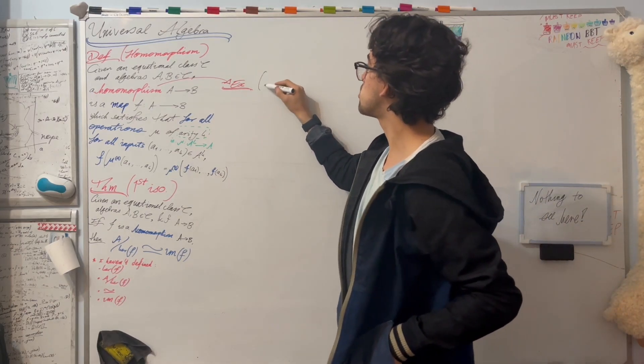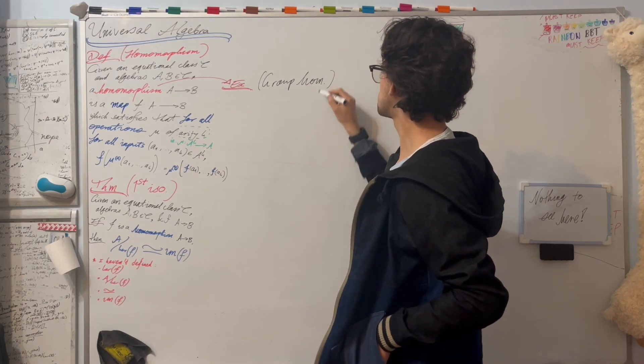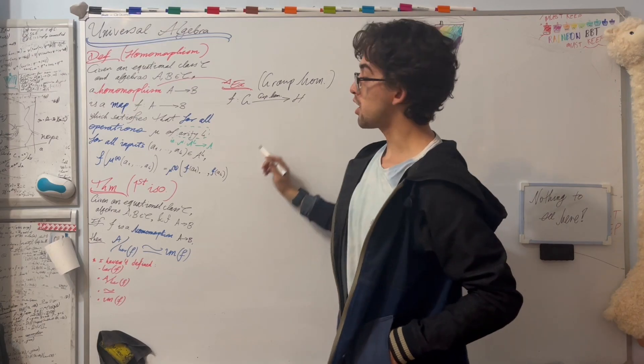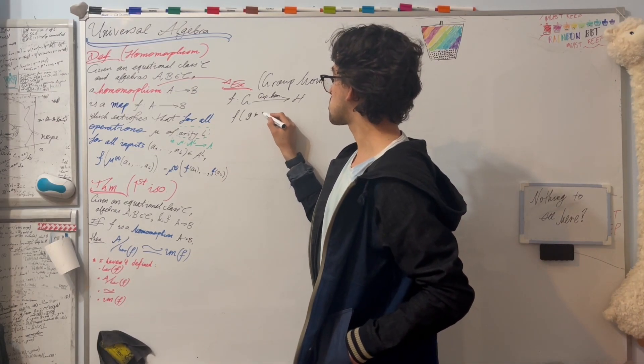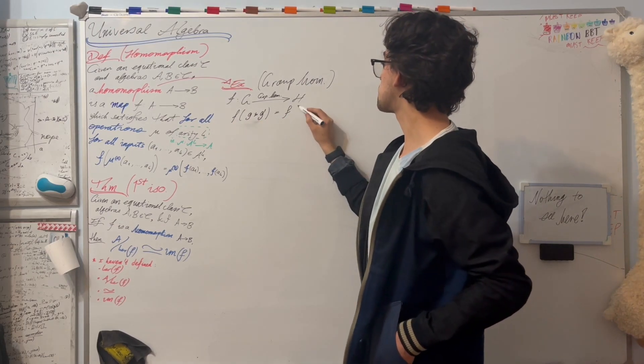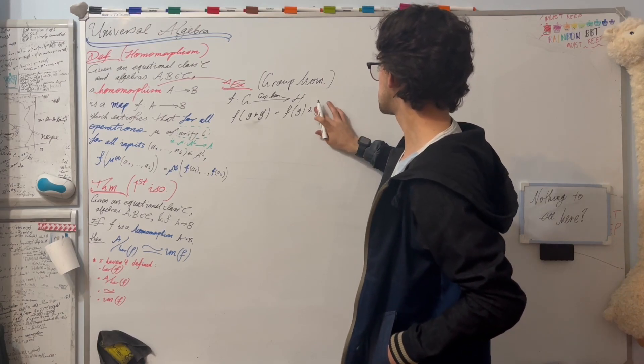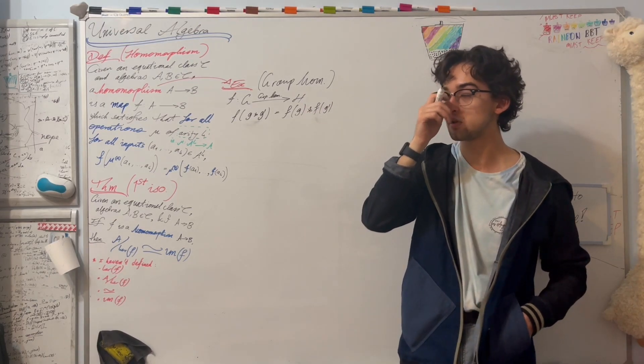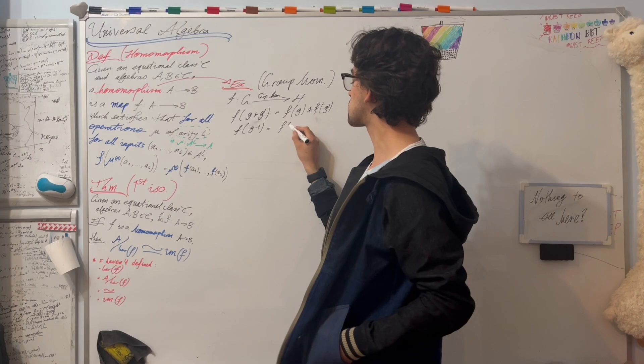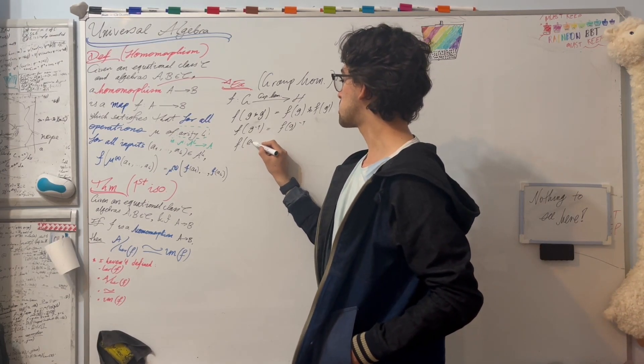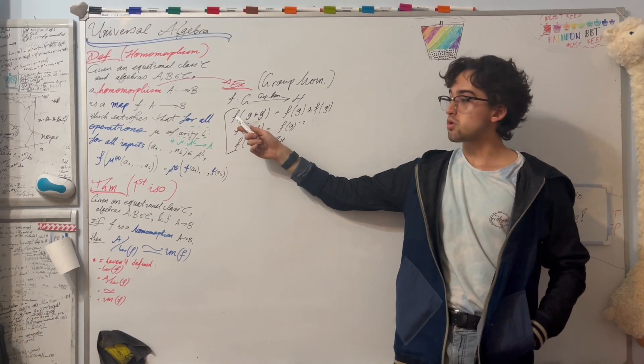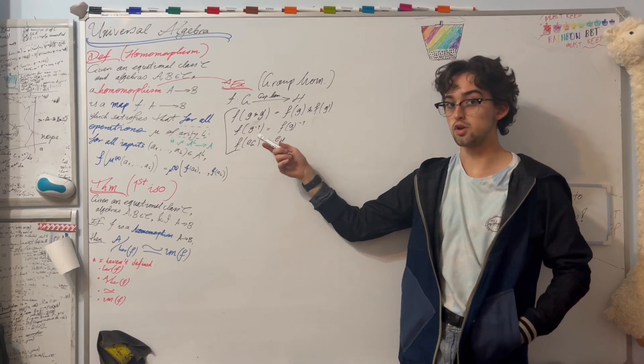It's the same as, for example, a group homomorphism. If f goes between groups G and H as a group homomorphism, then we have that f of (g star g') is going to be the same as f(g) star f(g'), of course by the definition of a group homomorphism. To show that this is a homomorphism in the universal algebra sense, I will also point out that f at g inverse is the same thing as the inverse of f of g, and that f of the identity element in G is the identity element in H. So these three conditions together show that f preserves the operations star, inversion, and identity, our nullary operation identity.